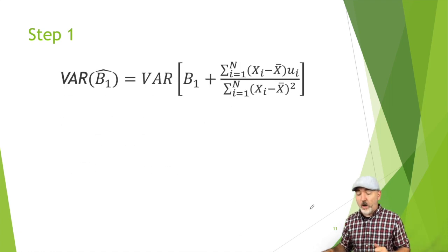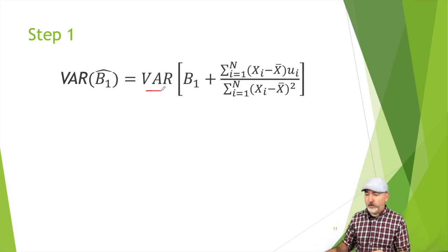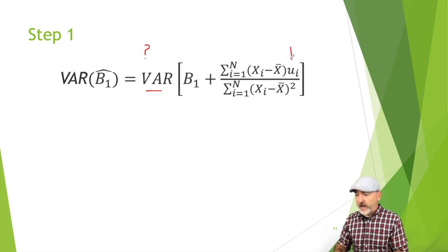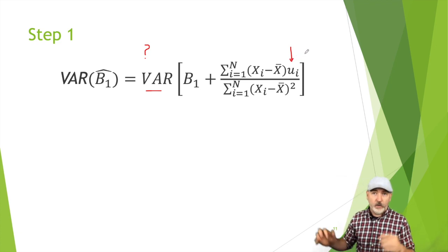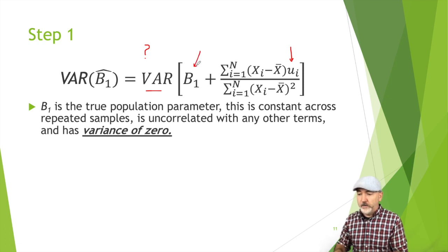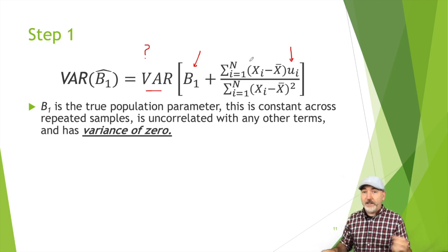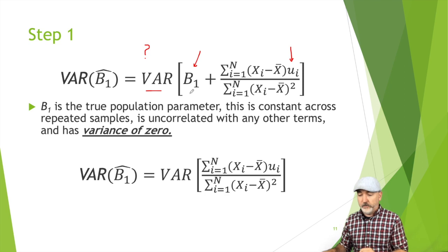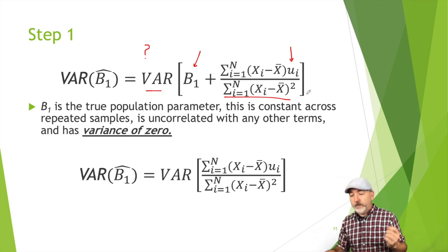Step one: cram the whole formula inside the variance operator. The spoiler is we want to narrow this down so the variance operator only applies to UI — getting everything else out. Since B1 is a fixed value completely uncorrelated with everything else, the variance of B1 is zero and it doesn't co-vary with the sum (x - x̄)·u term. So B1 can be effectively eliminated, leaving us with the variance of just that fraction.